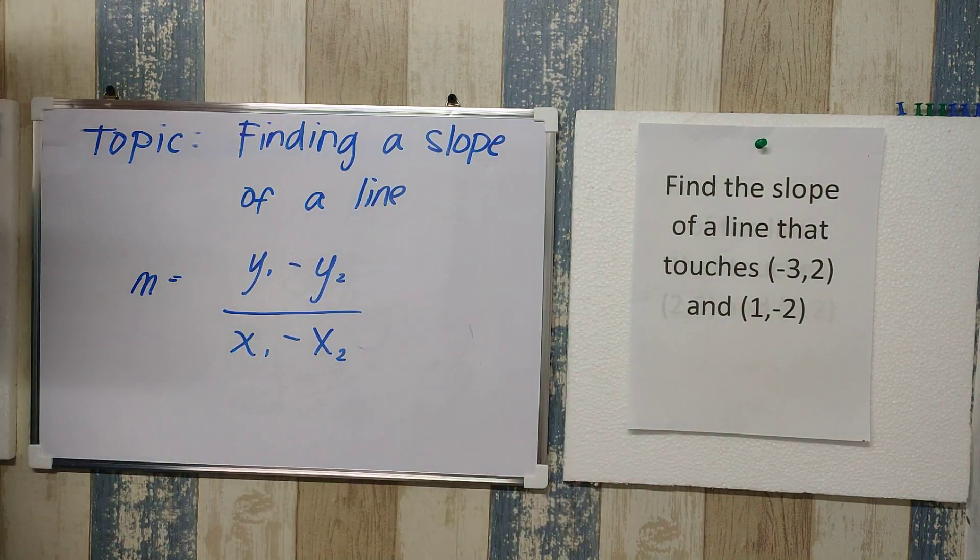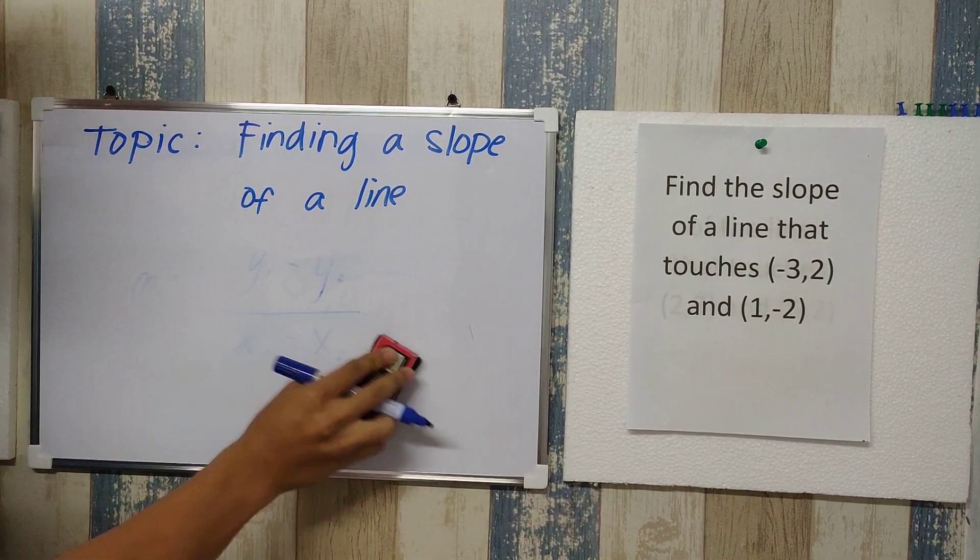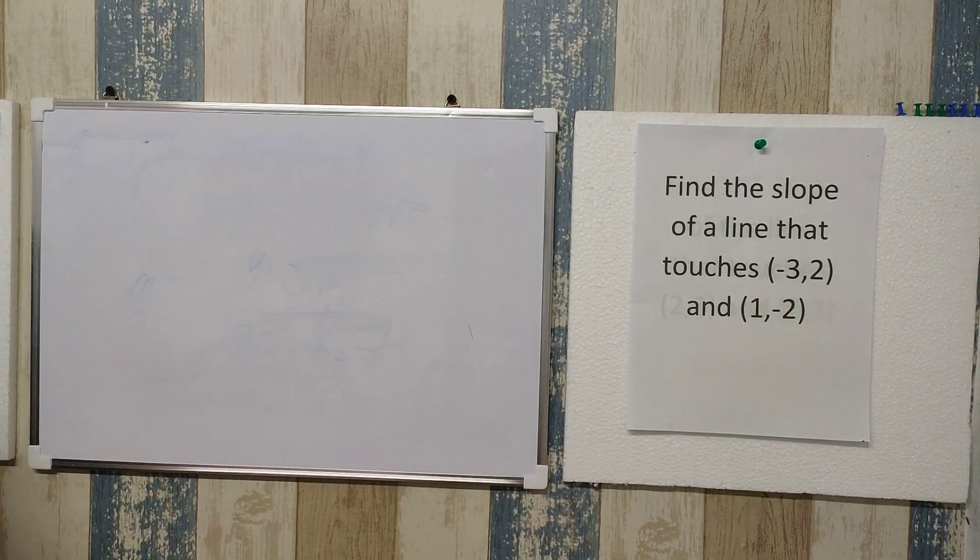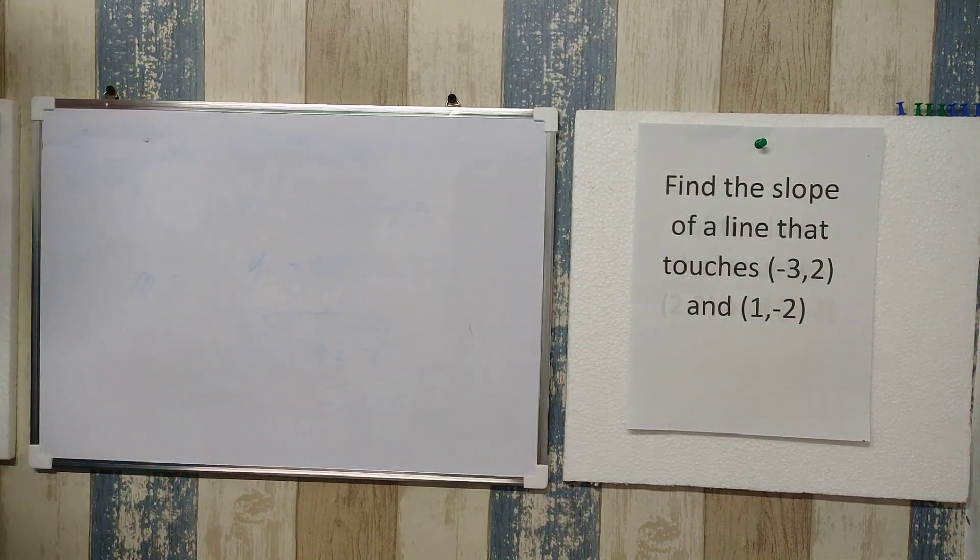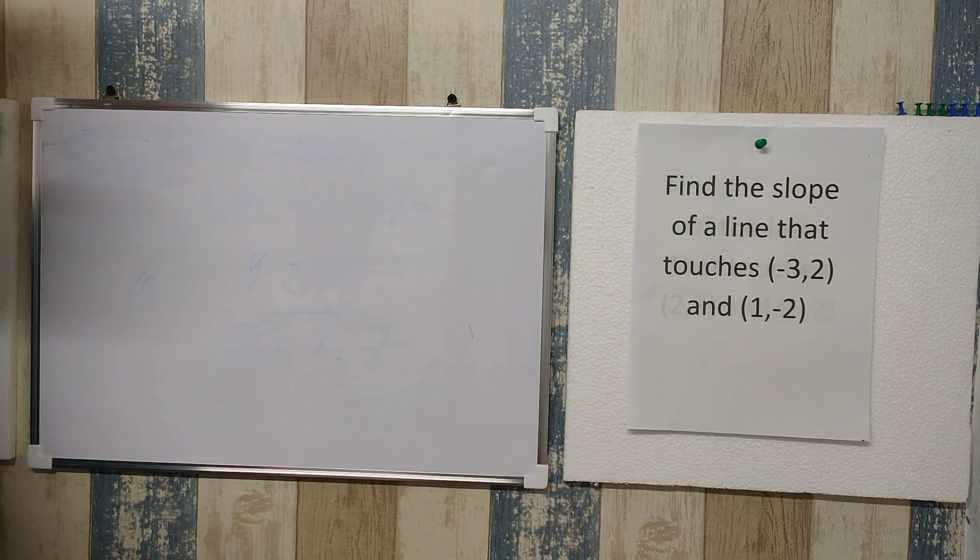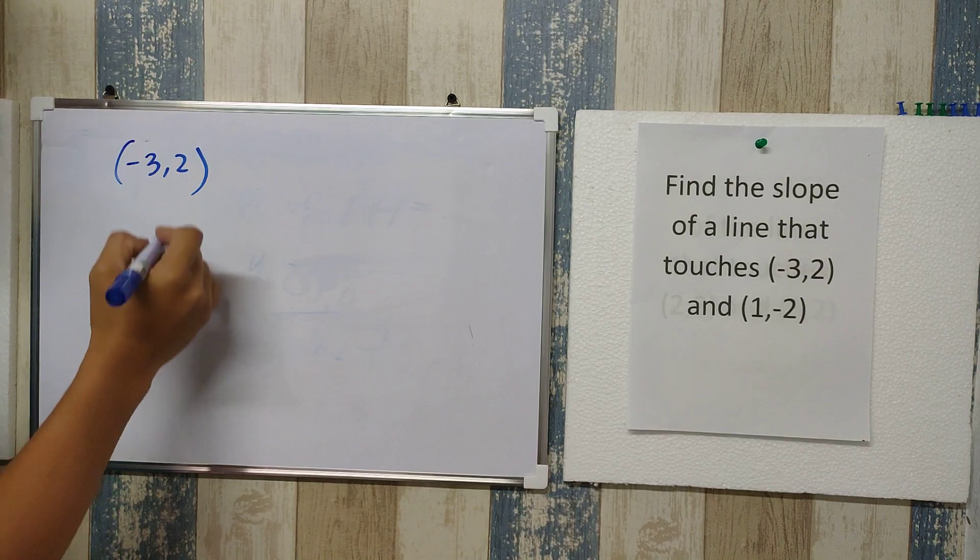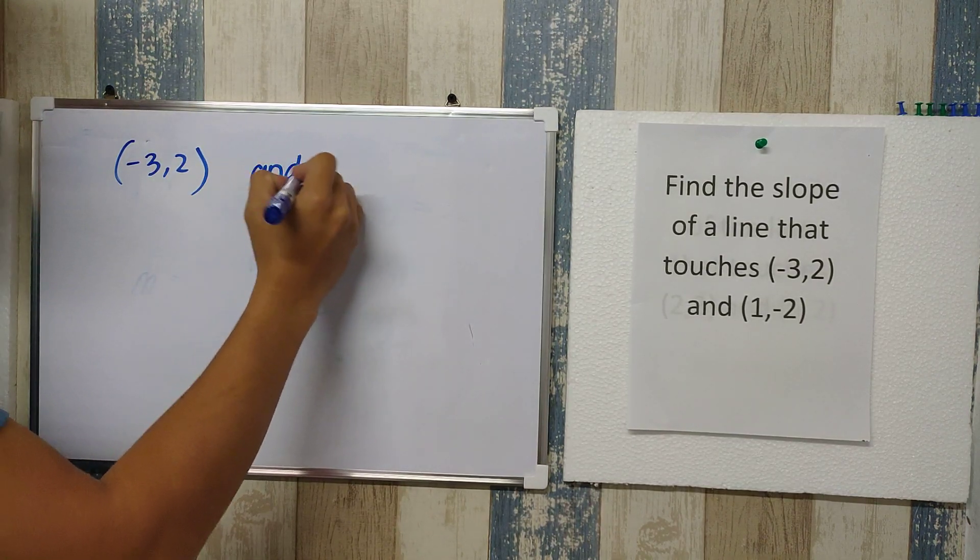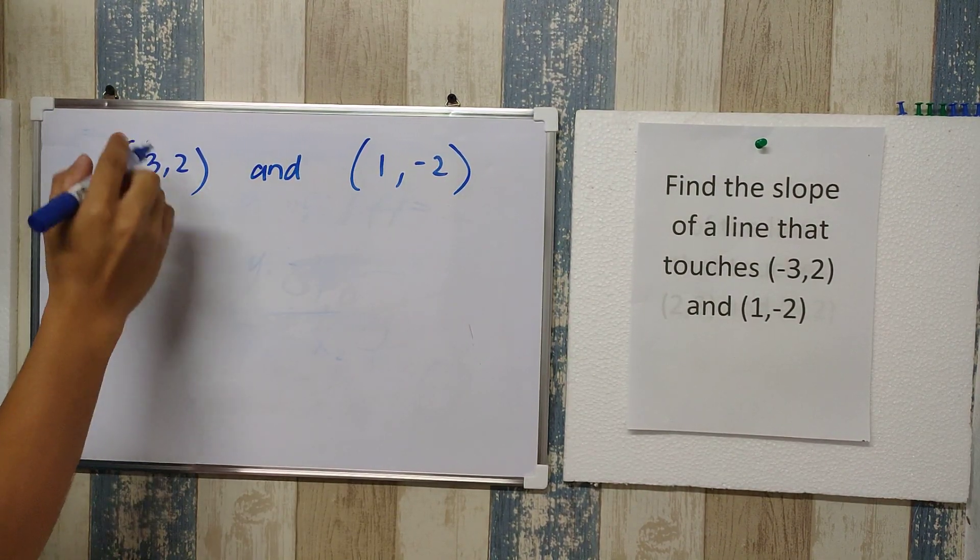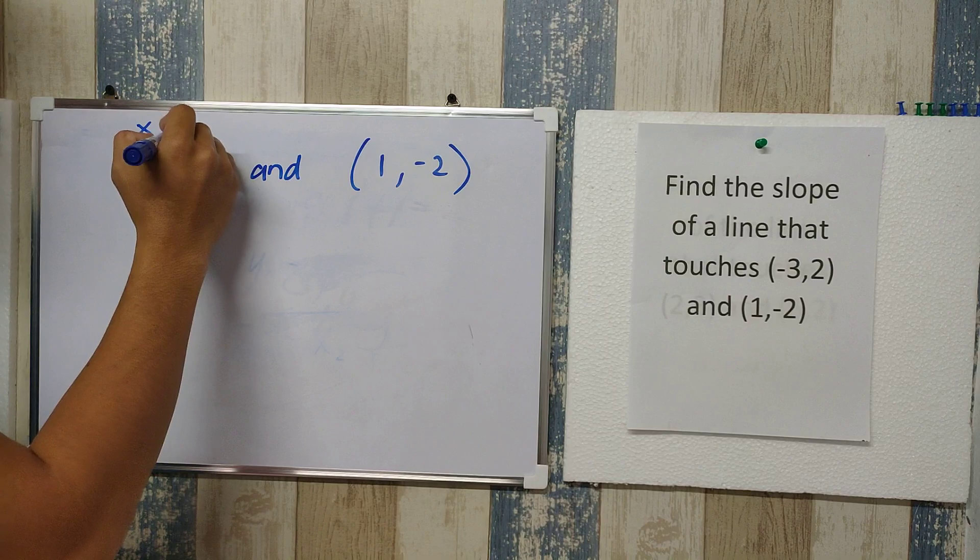Here we have an example. Find the slope of a line that touches negative 3 and negative 2. Let me erase this and then let's try to answer our first example. The hardest part of solving slope of a line is to identify which is the y sub 1, the y sub 2, the x sub 1, and the x sub 2. In our case, we have here negative 3 and 2 as the first point, and we also have 1 and negative 2 as our second point. Remember that the first coordinate is always the x, the second coordinate is the y.